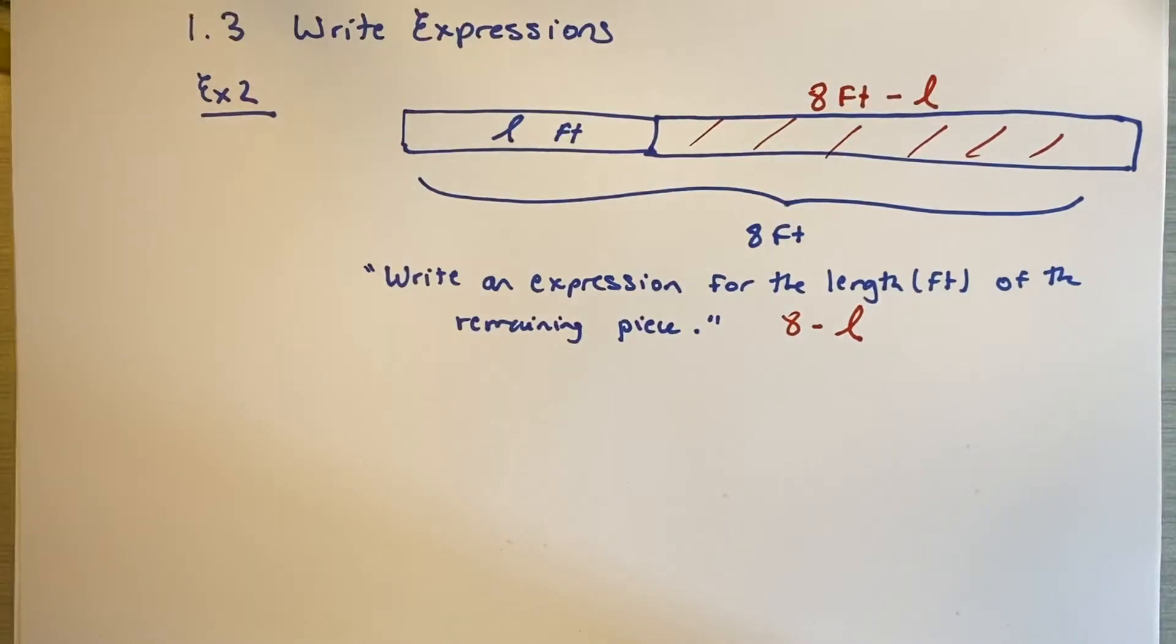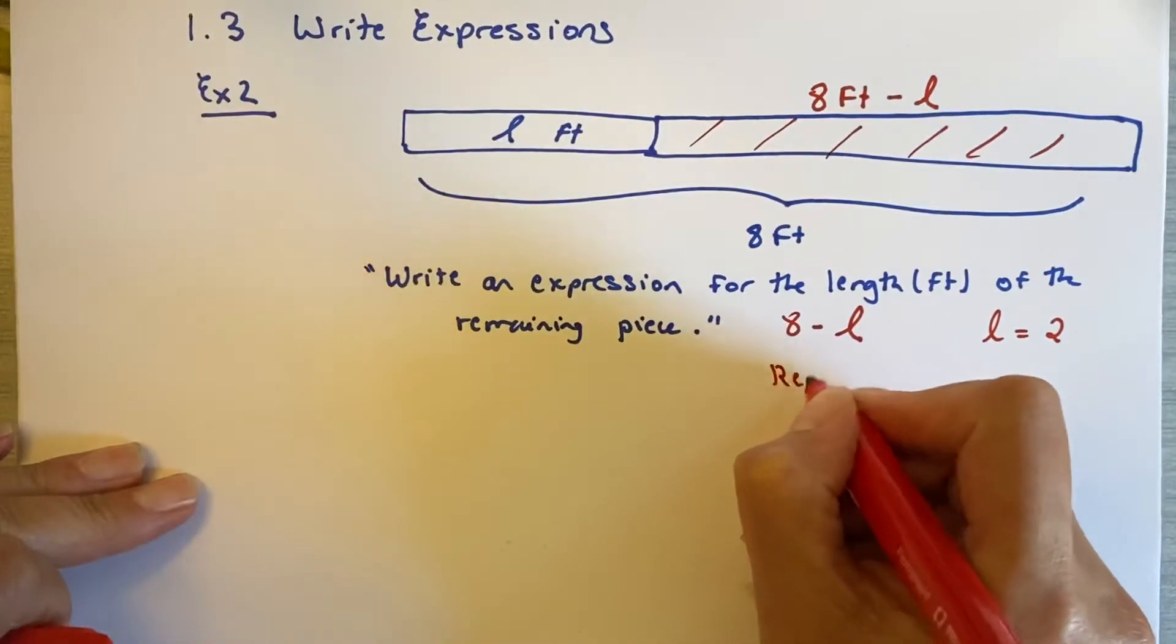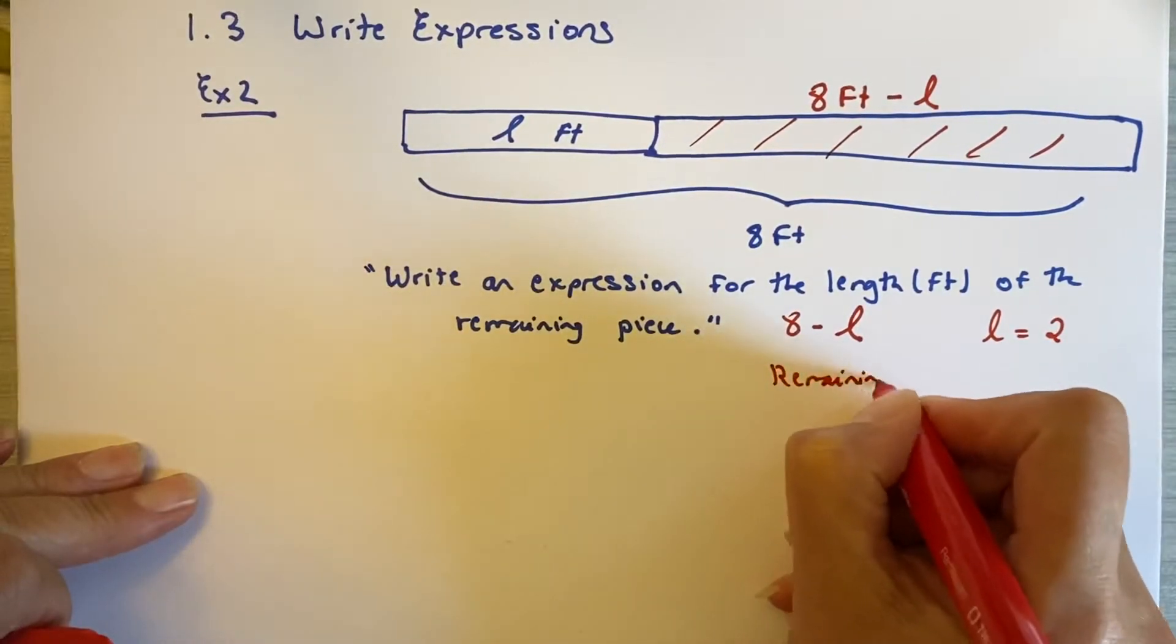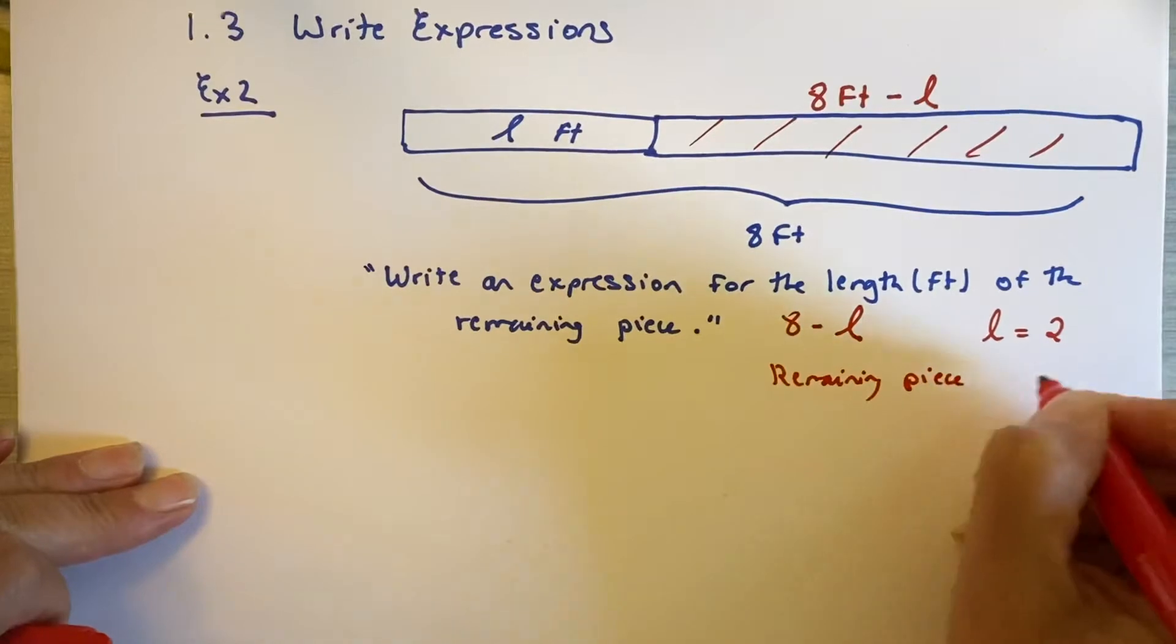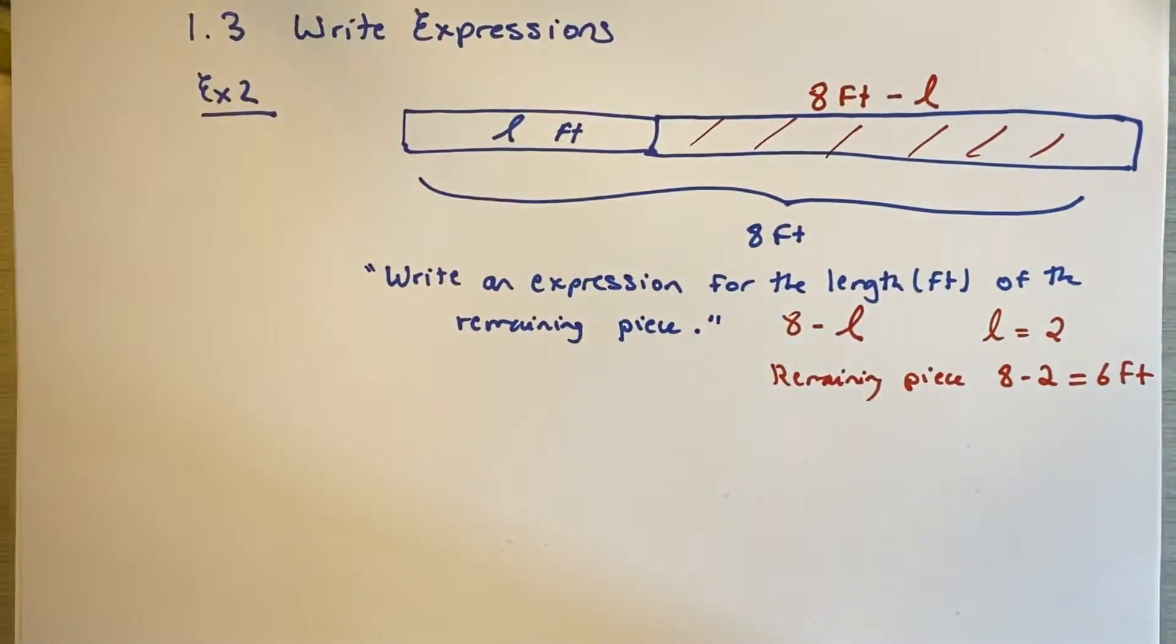The book tells you L is two. So if L is two, then the remaining piece is 8 minus 2 or 6 feet.